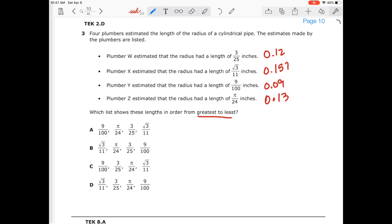So greatest, the biggest number is this one. So that eliminates A and that eliminates C. Now let's look at our second one. So we have pi over 24 and 3/25ths. The next biggest one, if I go from square root of 3 over 11, the next biggest one is going to be 0.13, which will give me pi over 24, which is my answer choice B.